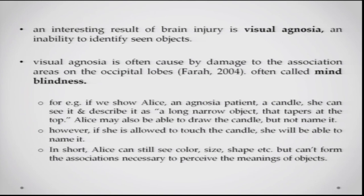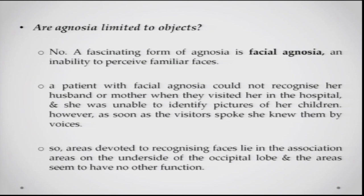Agnosia can also occur for faces — called facial agnosia or prosopagnosia — where patients cannot recognize familiar faces, including those of family members. One patient could not recognize her husband or mother visiting in the hospital, nor identify pictures of her children. However, as soon as a visitor began speaking, she could recognize them because the auditory link remained intact. The areas devoted to recognizing faces lie in association areas on the underside of the occipital lobe.